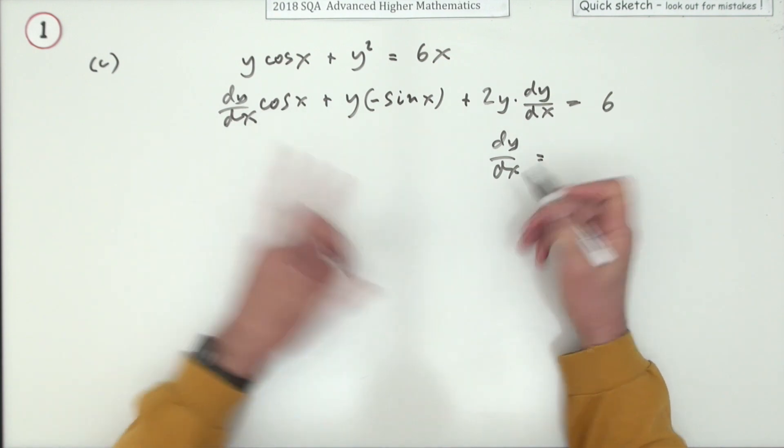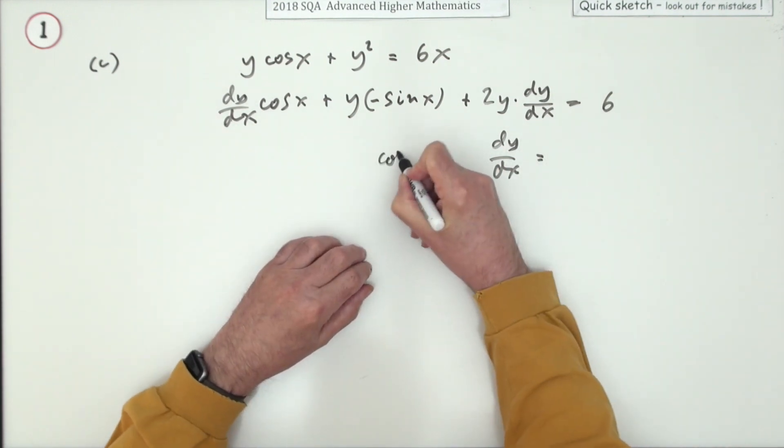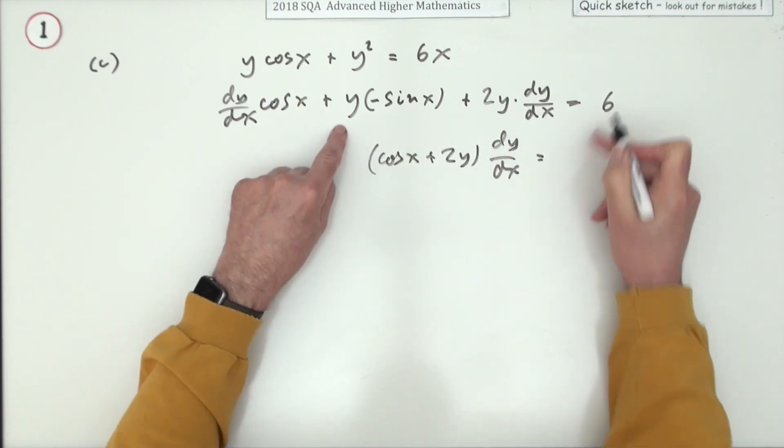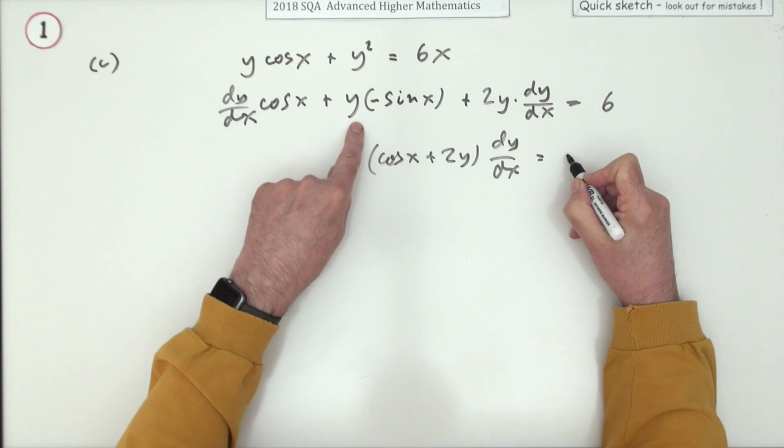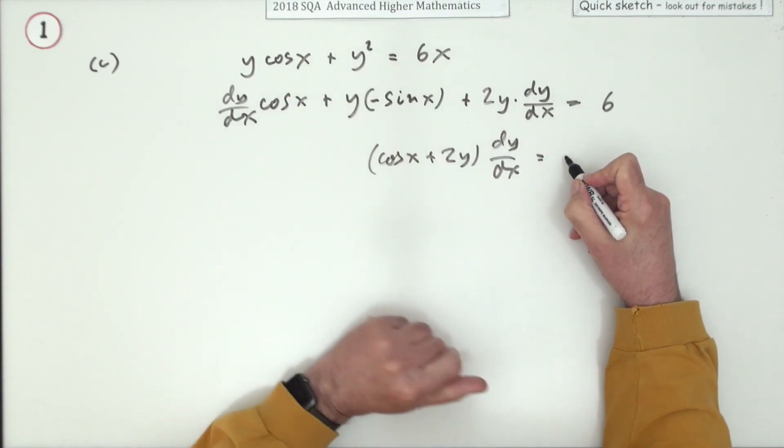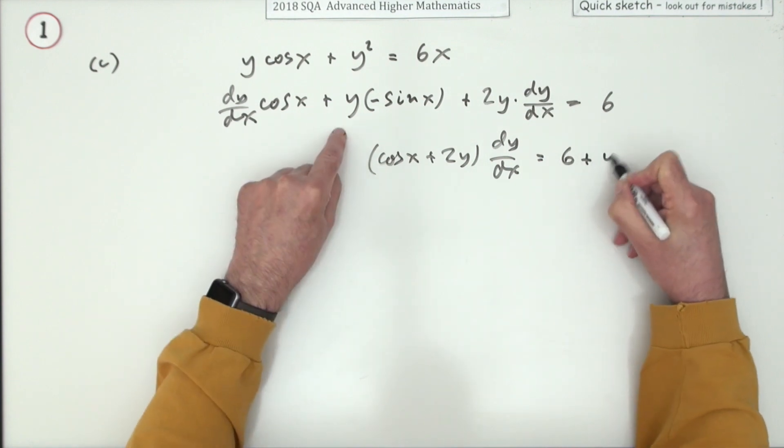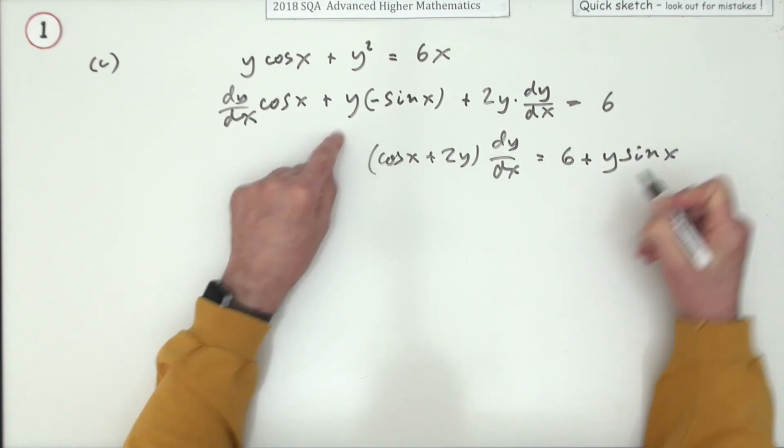What says dy/dx? There's cos x and 2y, whichever order you like: cos x plus 2y. Well it doesn't say it, well that didn't say it, and neither does this. So that's going to go across as a plus. 6 plus y sin x.